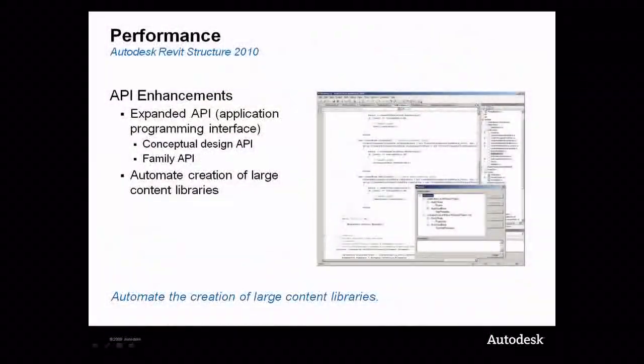Access to the Autodesk Revit model via the API include family creation and modification. Through the API, users have access to the new conceptual design features we talked about previously, as well as access to families. One of the major improvements is the ability to automate family creation via the API.